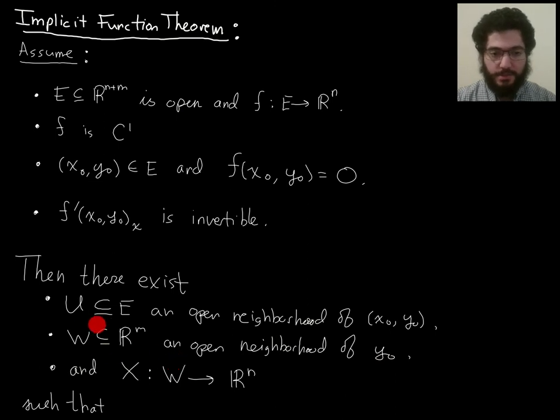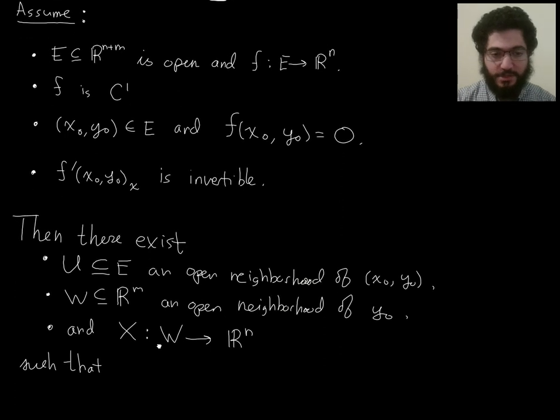So, remember W is a neighborhood of y_0. So, think of the elements of W as y's, as little y's. So, this is a function, capital X, that takes little y's and gives you n tuples. I'm calling it capital X, because what it outputs are things that you can think of as little x's. Okay, that will be justified by the rest of the conclusion.